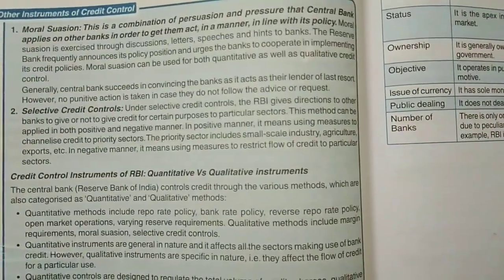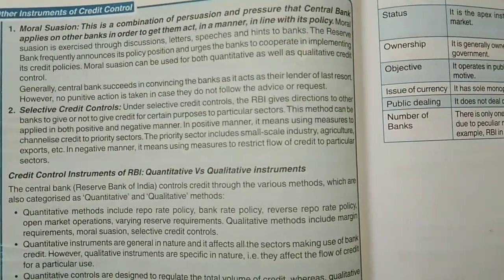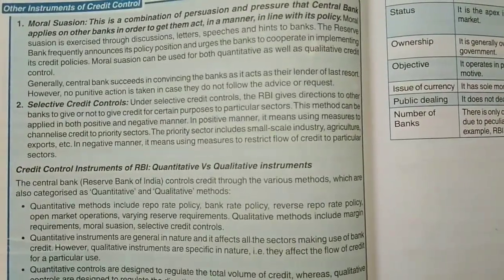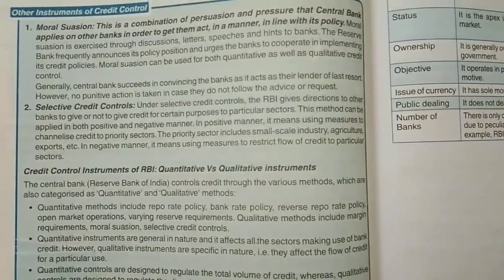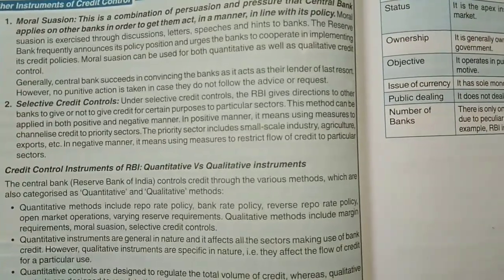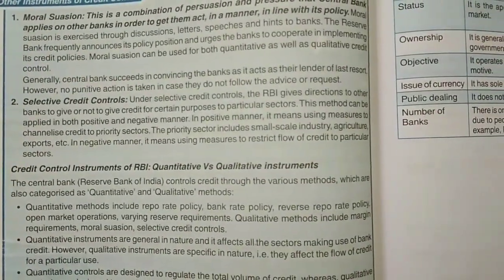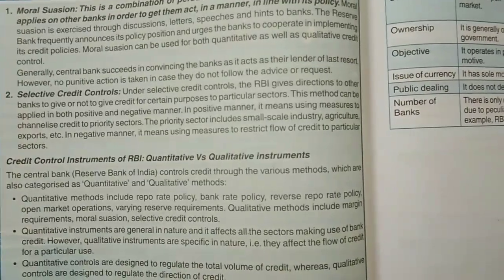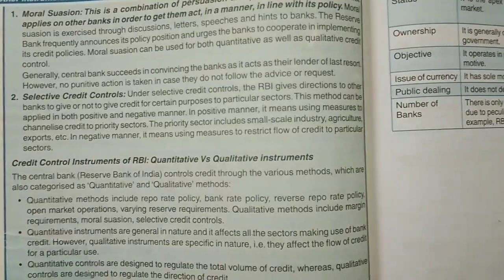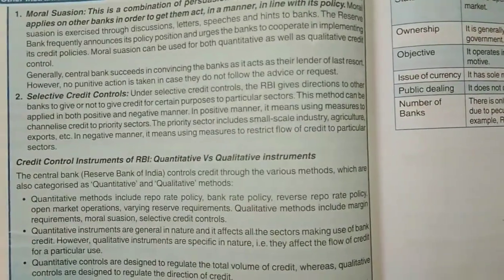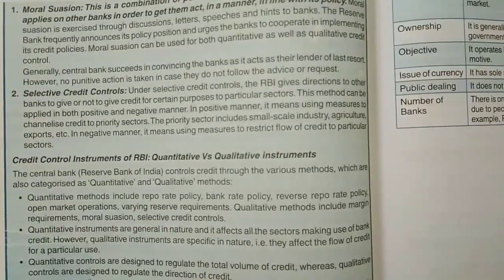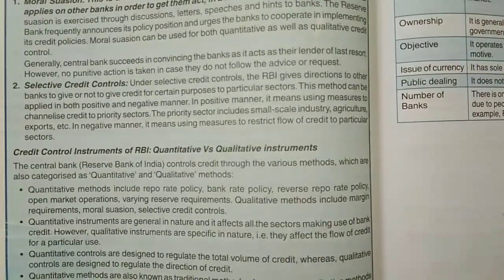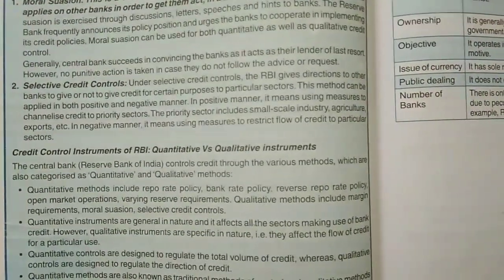Under selective credit control, the RBI gives direction to other banks to give or not to give credit for certain purposes to particular sectors. This method can be applied in both a positive as well as a negative manner. In a positive manner, it means using measures to channelize credit to priority sectors such as small scale industries, agriculture, and exports. In a negative manner, it means using measures to restrict the flow of credit to particular sectors.